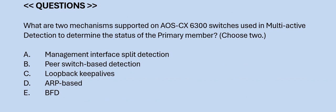Next question: What are the two mechanisms supported on AOS-CX 6300 switches used in multi-active detection to determine the status of a primary member? Choose two. Option A: management interface split detection. Option B: peer switch based detection. Option C: loopback keepalives. Option D: ARP based. Option E: BFD. The correct answers are Option A and D.